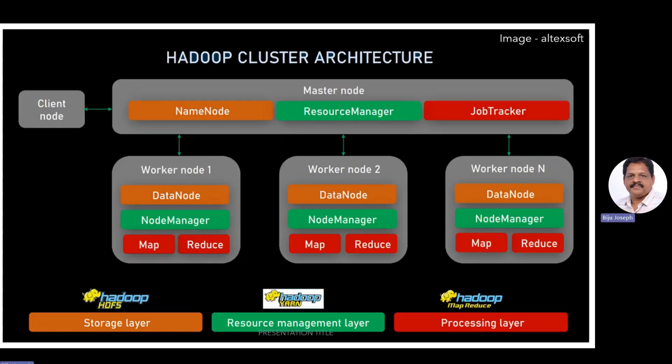Coming to the Hadoop cluster architecture, we see that we have a master node and worker nodes. Within the master node, you can see the NameNode — the master server that manages the file system namespace and regulates access to files by clients. It maintains the file system tree and metadata for all files and directories, stored in memory for fast access.